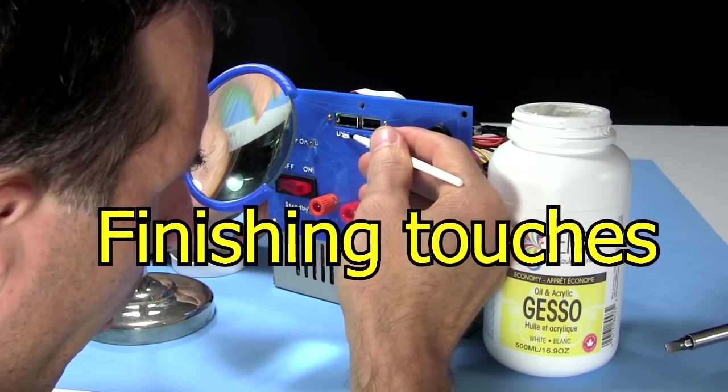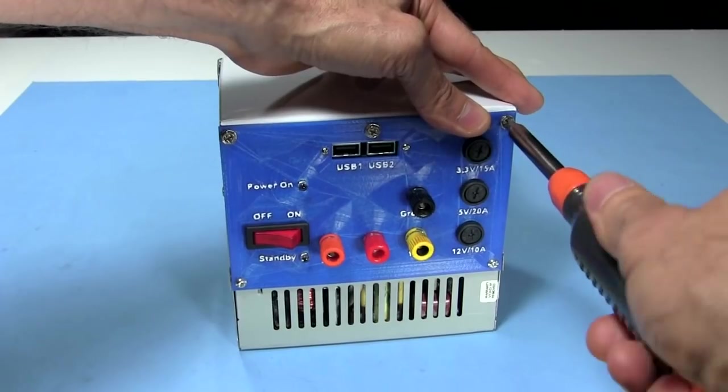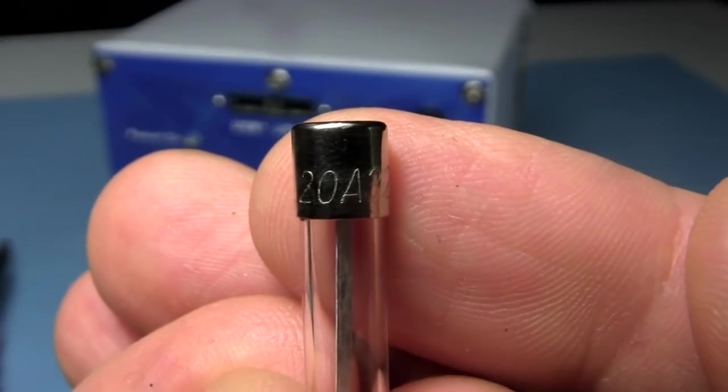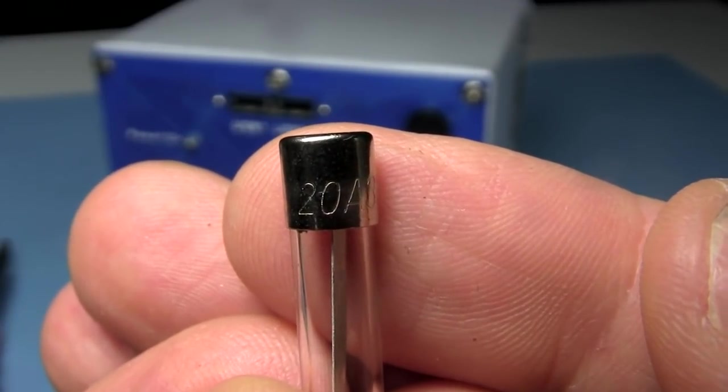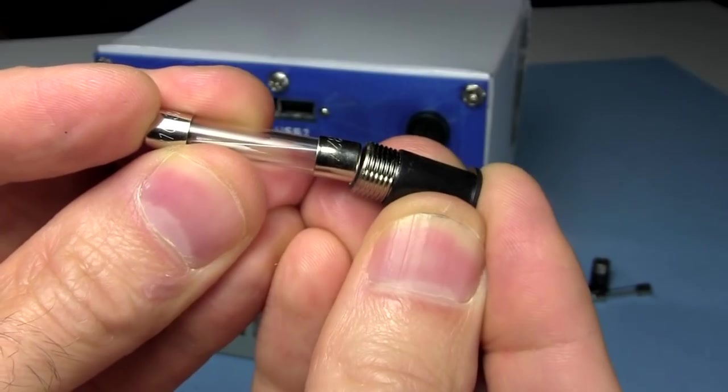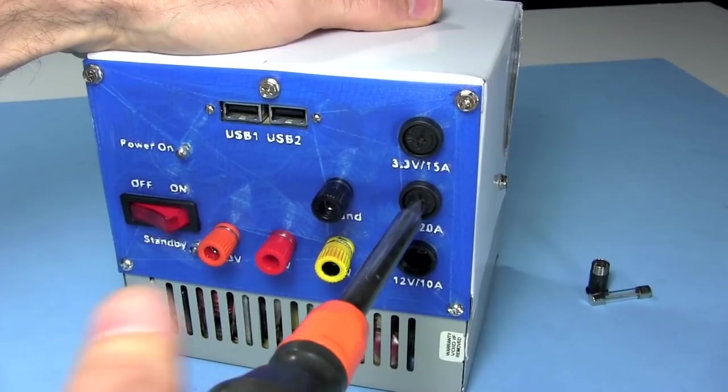Lastly, some finishing touches. I carefully paint the faces of the raised letters using gesso. Then I put the cover back on. And finally come the fuses. Their amp rating is written on one of the caps. Here it's 20A or 20 amps. I put the fuse in the fuse holder and screw it in place. Other fuse holders may work differently.